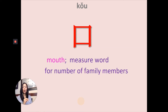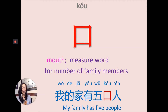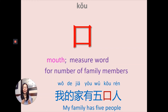口 originally meant mouth. In this lesson, it is a measure word for family members. 我的家有五口人 — my family has five people. 五口人 uses 口 as the measure word for family members. You can also say 我的家有五个人 — both 五个人 and 五口人 are acceptable, it's up to you.